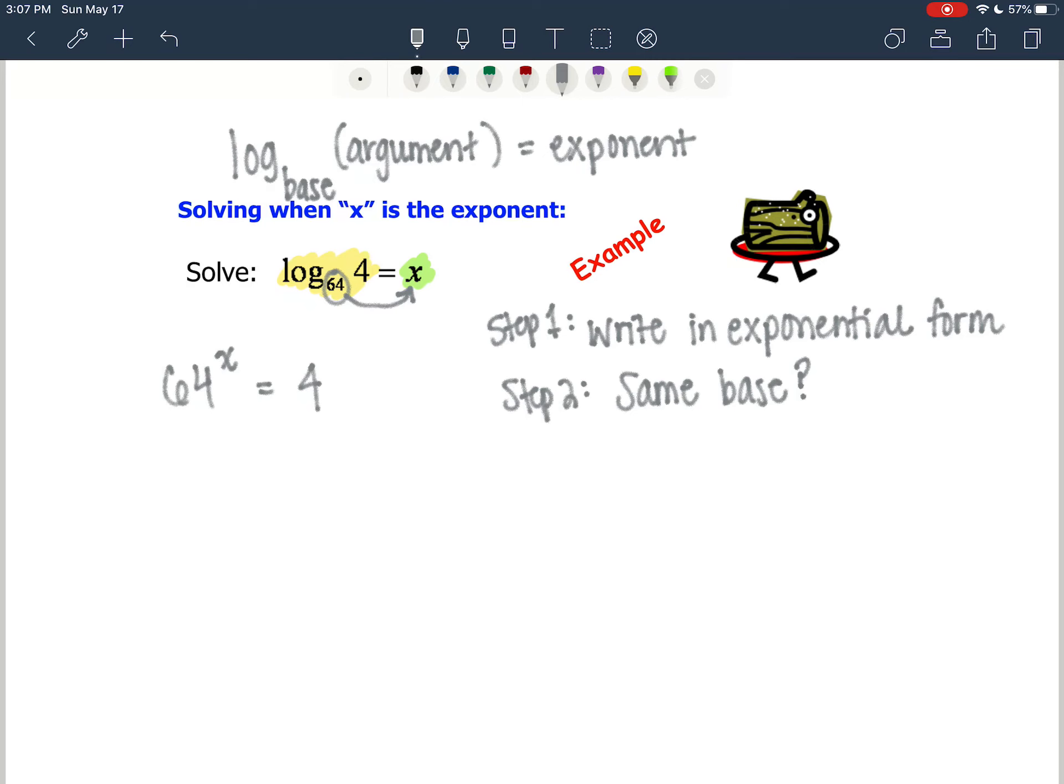1 squared through 25 squared, 1 cubed through 10 cubed, 1 to the 4th through 5 to the 4th, 1 to the 5th through 4 to the 5th. So if you know those, then this 64 is the same thing as 4 cubed. So we have 4 cubed raised to the x power is equal to 4. That's 4 to the 3x equals 4 to the 1st.